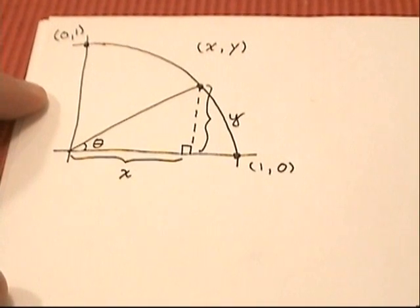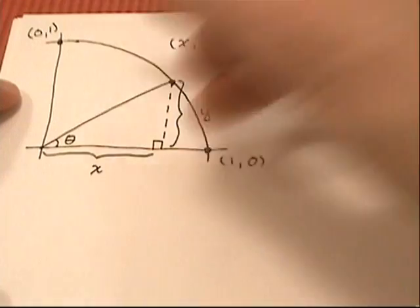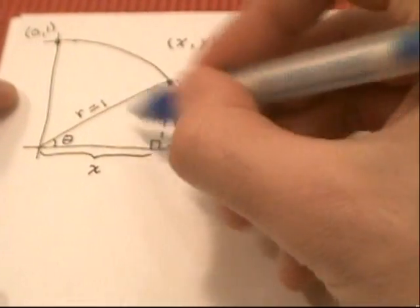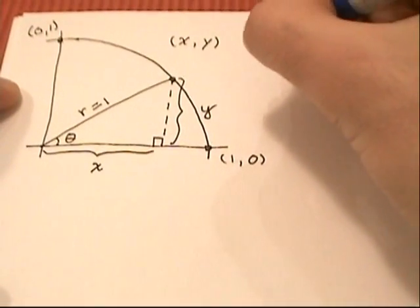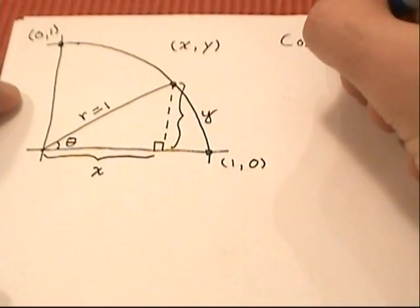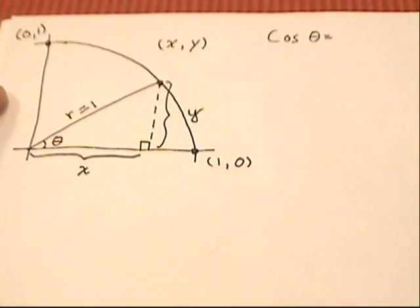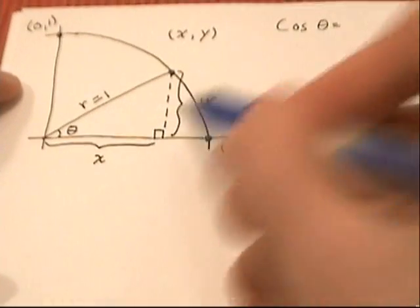Remember also that our radius is always equal to 1, and the radius in this case is the hypotenuse because it's opposite the right angle. So cosine of an angle is always defined as adjacent, in this case this length x,